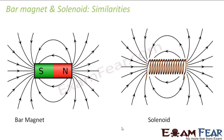Now let us look at some similarities between a bar magnet and a solenoid. As I mentioned before, the magnetic field lines pattern of a bar magnet and a solenoid are exactly similar. We will look at some other similarities as well so that we can conclude something interesting.